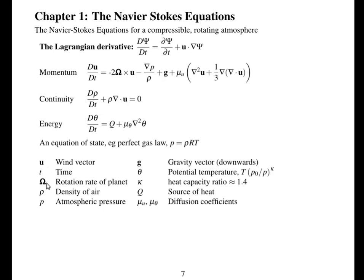Density of the air is rho. Atmospheric pressure P. The acceleration due to gravity G. Potential temperature theta. That's related to the temperature and the pressure. Kappa is the heat capacity ratio. It's approximately equal to 1.4 in the atmosphere.